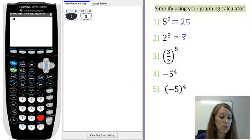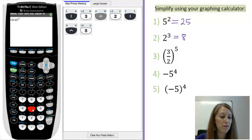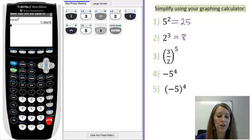So, open parentheses, 3, divided by 2, close the parentheses, and then the caret key to the fifth power. Push over to get out of the exponent. And then we can push enter to simplify.